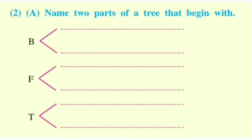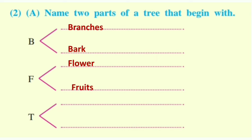Q2a. Name two parts of a tree that begin with the given letters. Answer: B – Branches, Bark. F – Flower, Fruits. T – Treetop, Trunk.